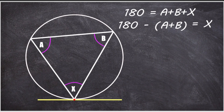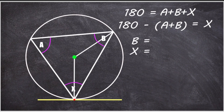Next, I'm going to make use of the radius of the circle, drawing one radius through angle b and another through angle x. The addition of these radii does several things: it introduces an angle at the center, and it creates a triangle within the main triangle.